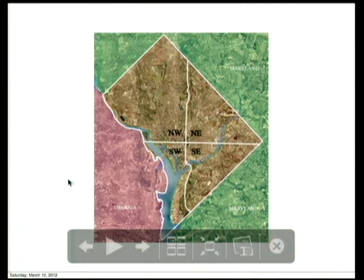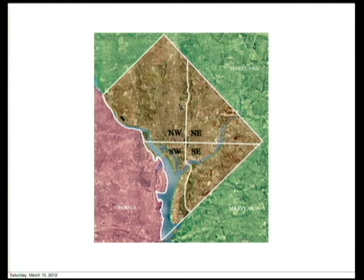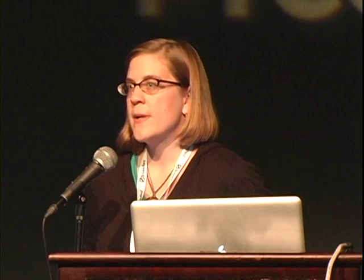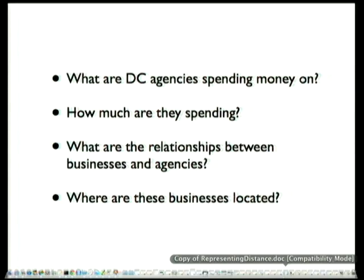Let's orient ourselves to our study area. DC is nestled between Maryland and Virginia, so any look at the business landscape has to take those two states into account. There are geographic constraints on the pattern of businesses within the city, as well as tax and permit constraints. The questions we were really interested in: What are DC agencies spending their money on? How much are they spending? What are the relationships between businesses and city agencies? And where are these businesses located?